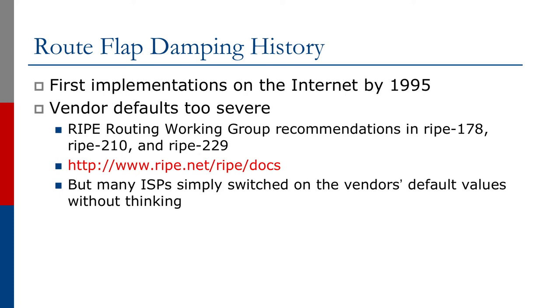Looking at the history of flap damping, it was introduced to the internet around 1995, and the operations industry very quickly learned that the vendor defaults were somewhat too severe. The vendors didn't really know what default values to use, and the defaults introduced seemed reasonable at the time. In Europe, the RIPE Routing Working Group studied the impact of route flap damping across networks, with contributions from North American operators as well. This resulted in document series RIPE-178, RIPE-210, and RIPE-229, which introduced recommendations including different levels of damping for /22s, /23s, and /24s, and excluded route name servers from flap damping.